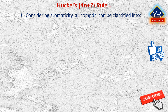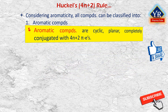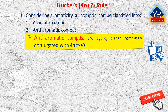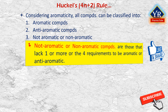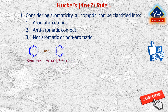Considering aromaticity, all compounds can be classified into aromatic compounds, anti-aromatic compounds, and non-aromatic compounds. Aromatic compounds are those which are cyclic, planar, completely conjugated compounds with 4n+2 pi electrons. Anti-aromatic compounds are those that are cyclic, planar, completely conjugated, with 4n pi electrons. Non-aromatic compounds are those that lack one or more of the four requirements to be aromatic or anti-aromatic. An aromatic compound is more stable than a similar acyclic compound having the same number of pi electrons. For example, benzene is more stable than hexa-1,3,5-triene.